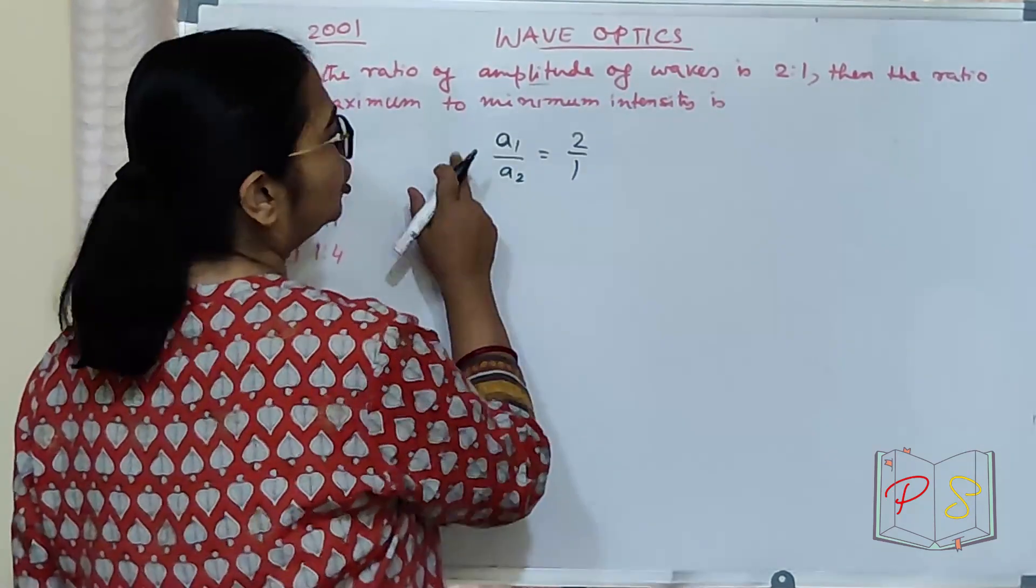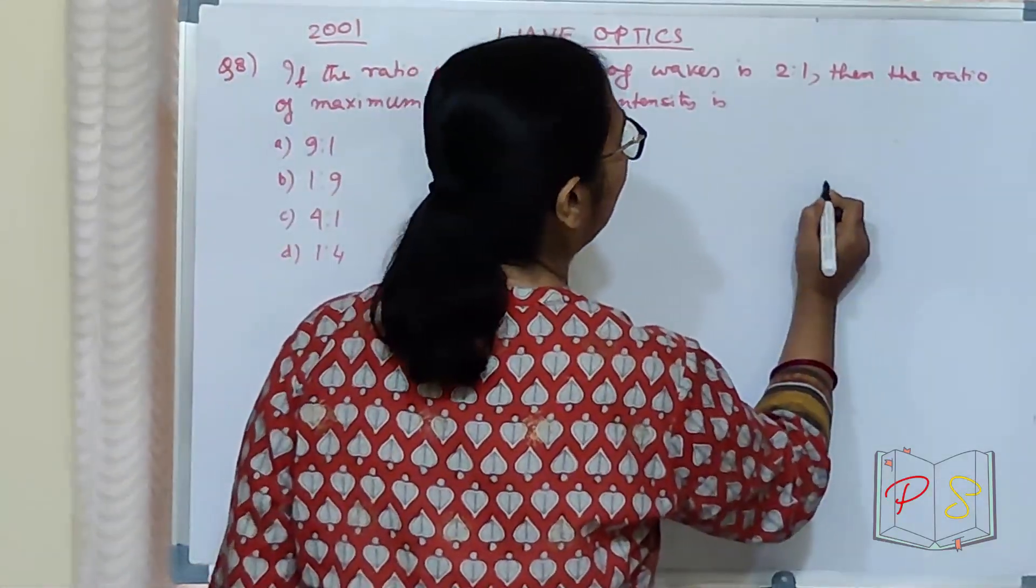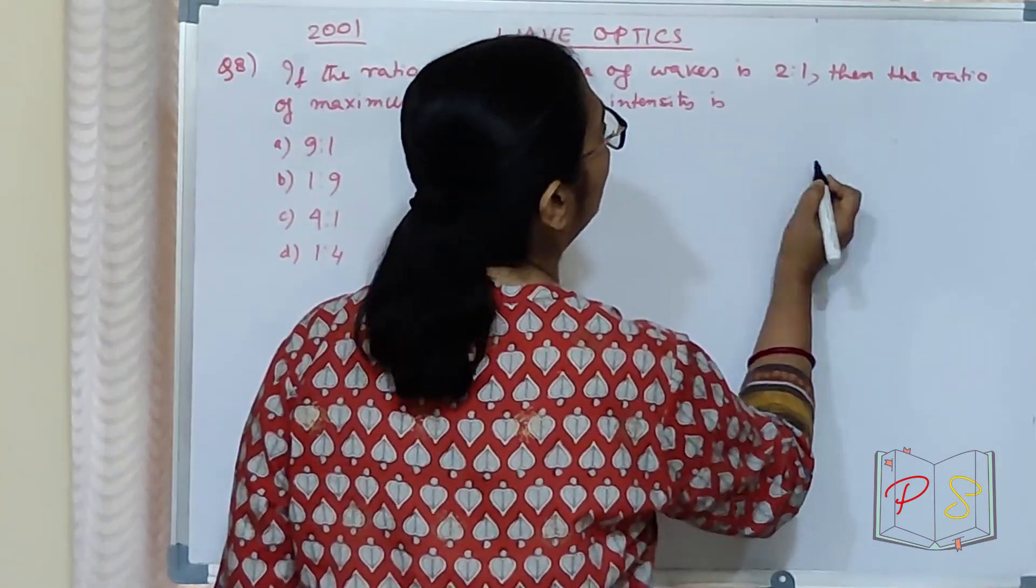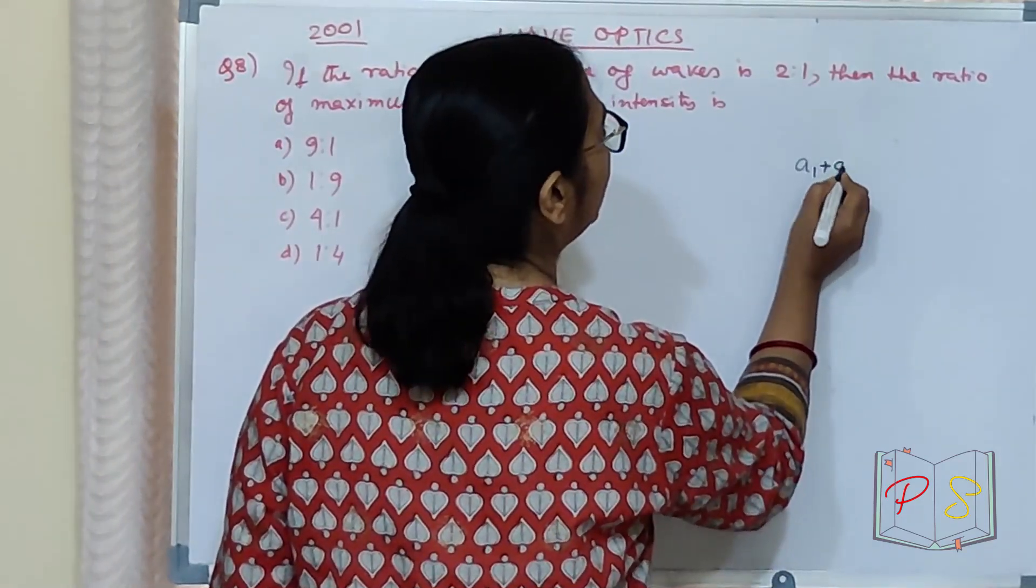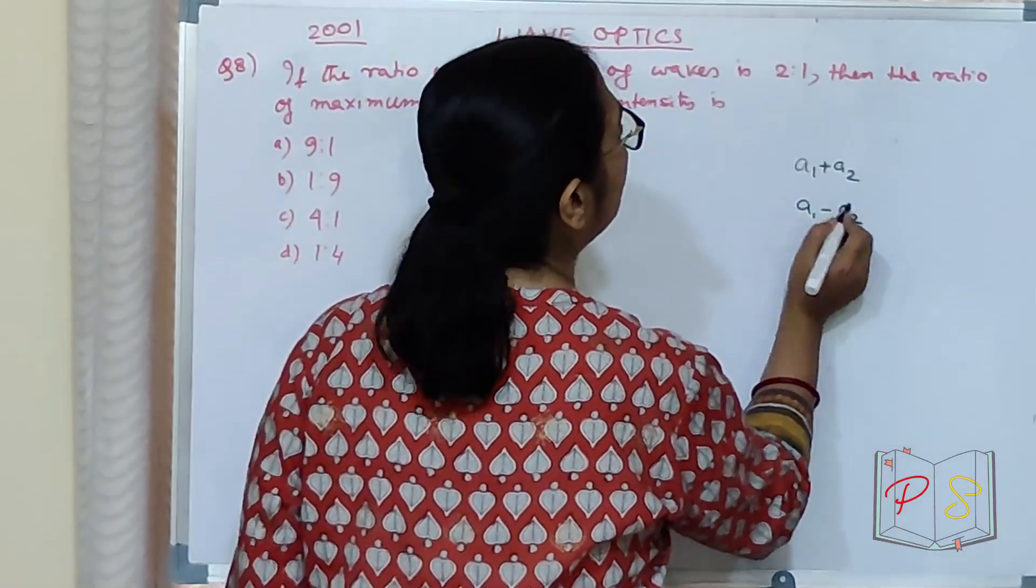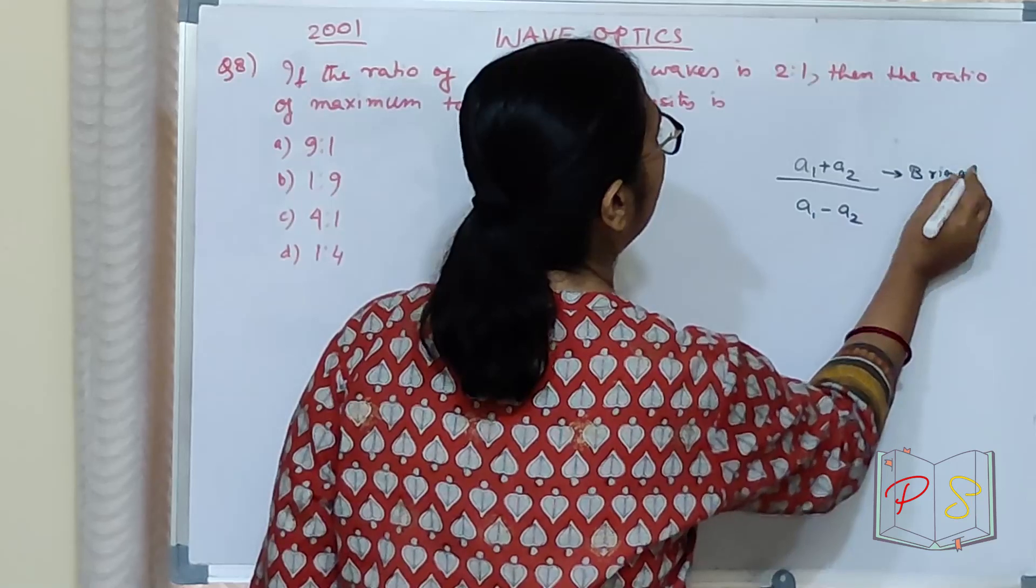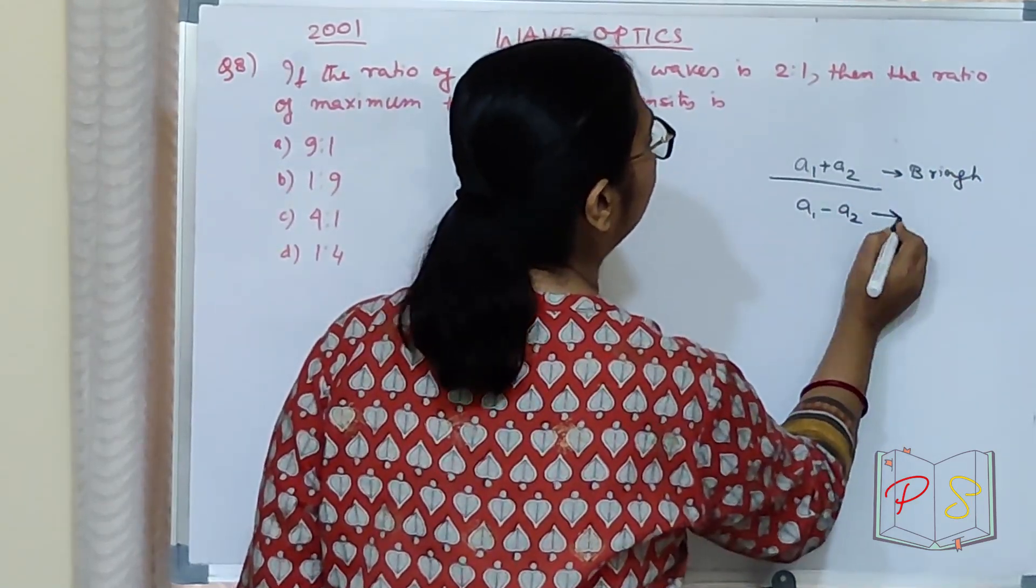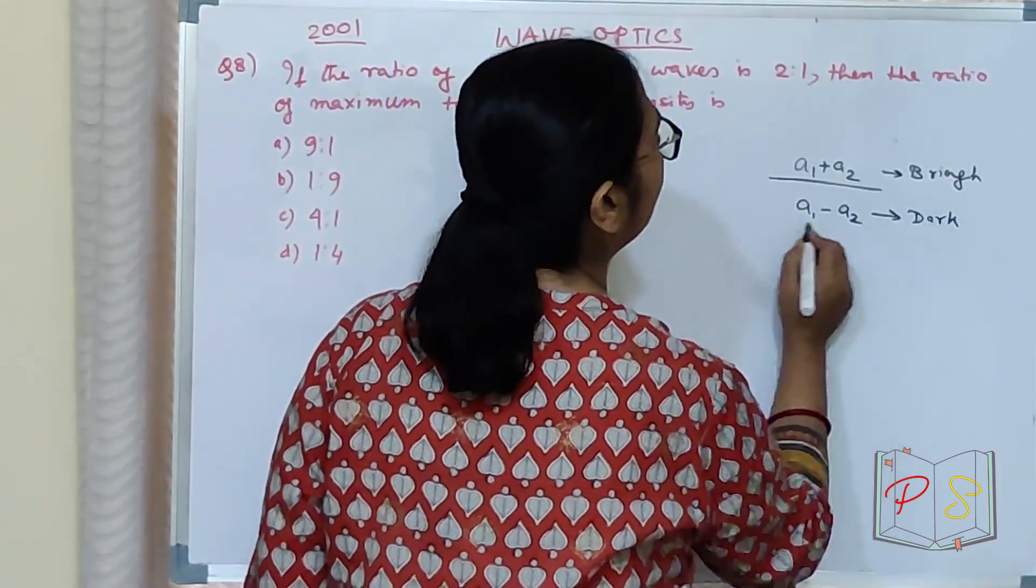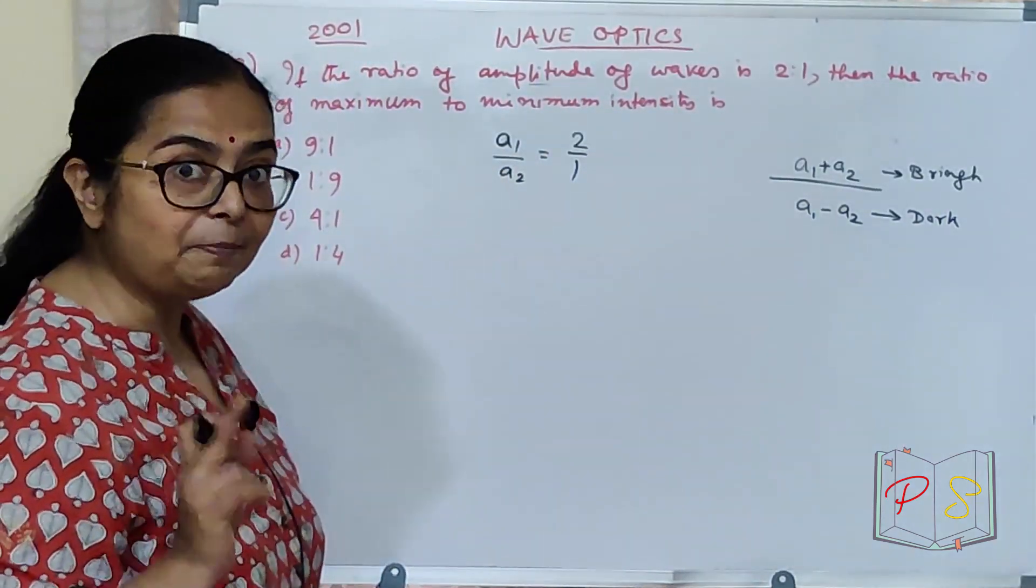When superposition occurs, what will happen? What will be the amplitude? One amplitude will be A1 plus A2. Another amplitude will be A1 minus A2. For bright fringe, A1 plus A2 will be amplitude. For dark fringe, A1 minus A2 will be the amplitude.